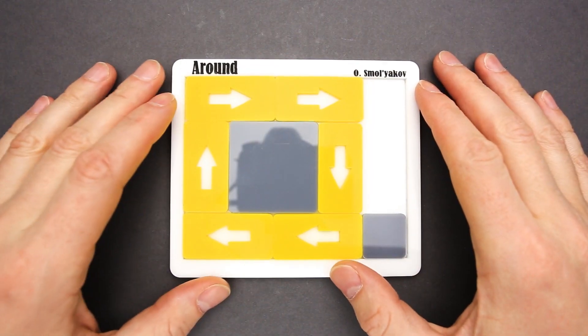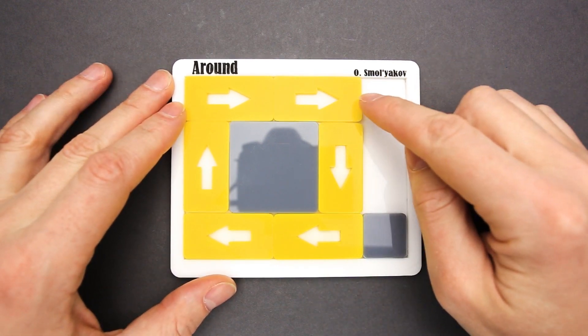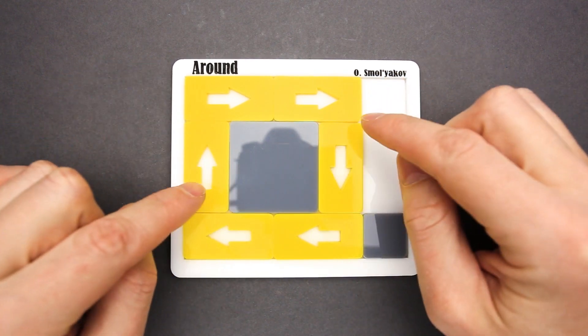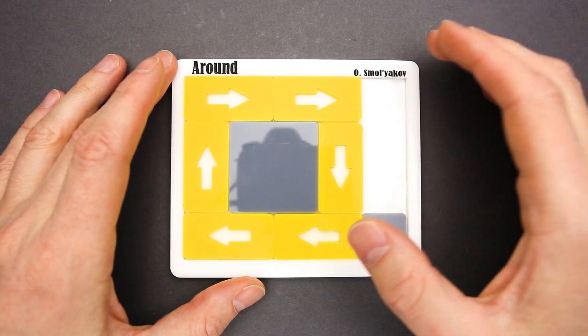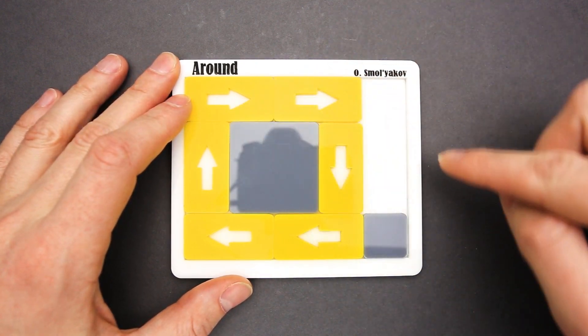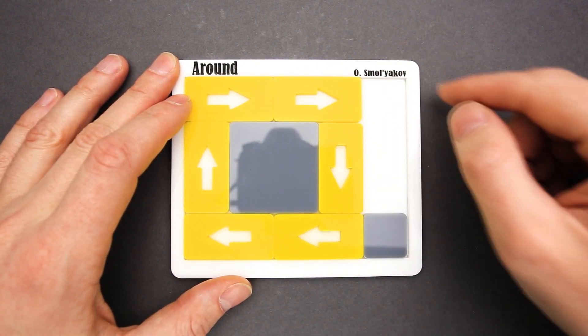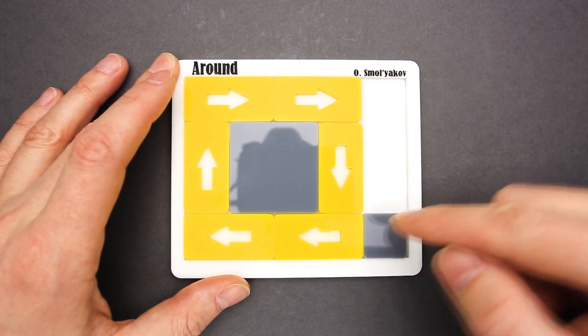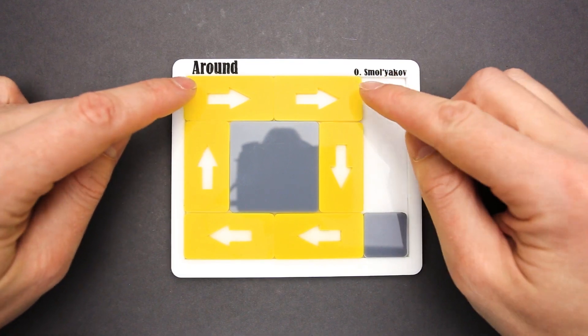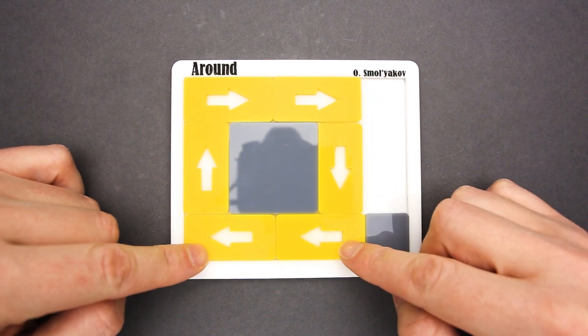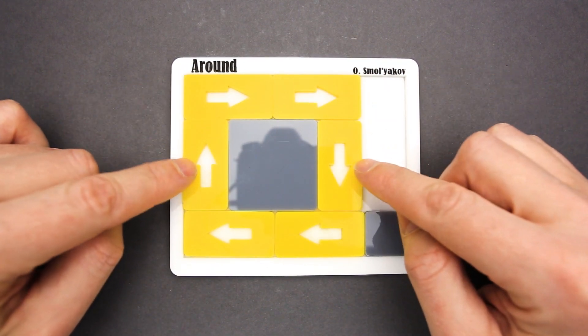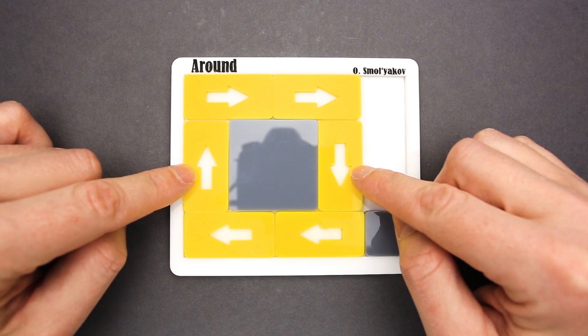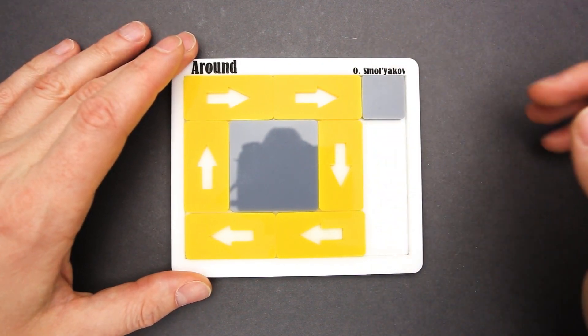So let's try to solve the Around puzzle. The objective here is to switch all arrows so that they will be facing opposite direction. Now they are looking to the right, and I have to put them in such way that they will be facing to the left. So now it is clockwise. I have to do it counterclockwise. That means that I have to put these two on the bottom and these two on top and switch places of these two arrows. Let's see what I can do.